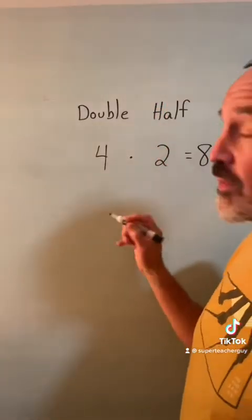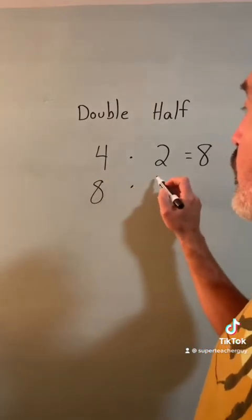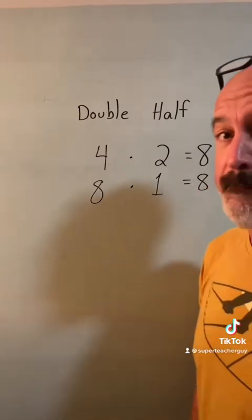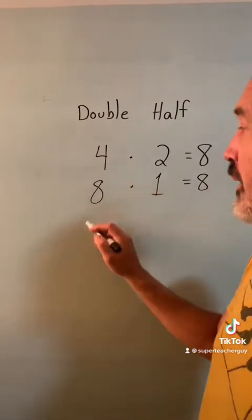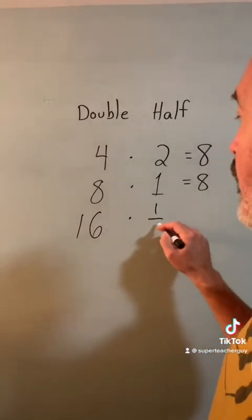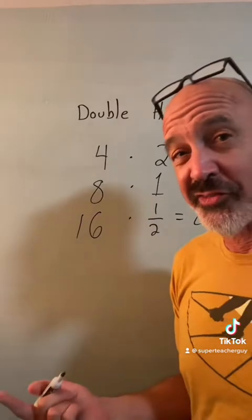If 4 times 2 is 8, you can double 4, cut 2 in half, and you get the same answer. You can do it again and get 16 times one-half, that equals 8. Teach your kids to be pattern seekers.